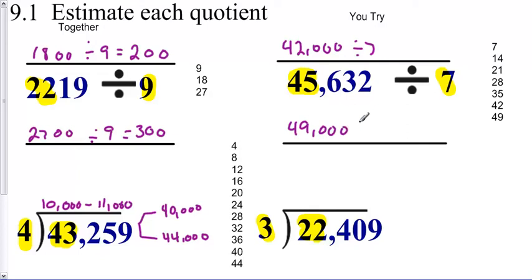So my two estimates are my low is 42,000 divided by 7, and then my high is 49,000 divided by 7. So you should have had 6,000 and you should have had 7,000.